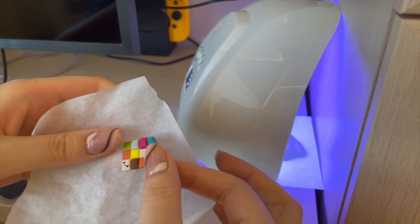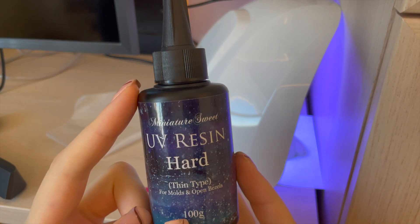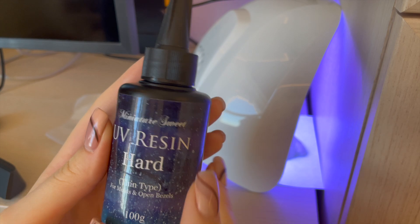Over here, I have the baked quilt. By the way, for the glaze, I use miniature sweet UV resin.